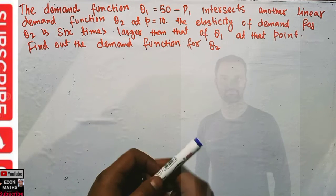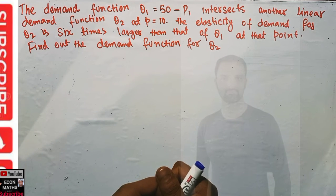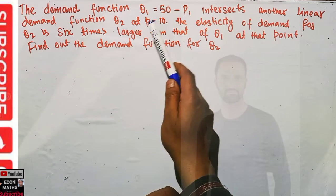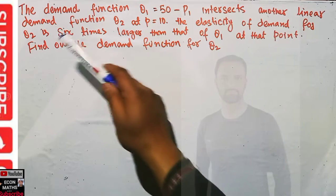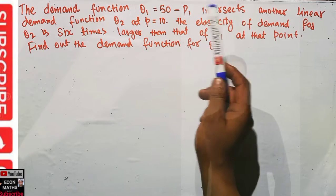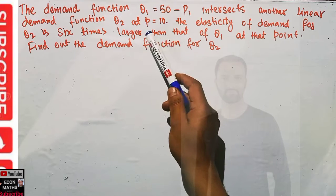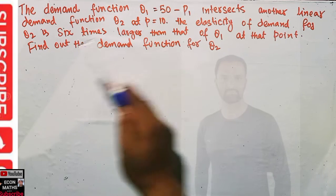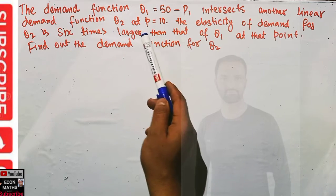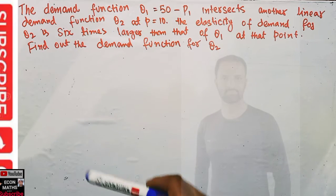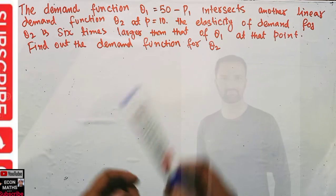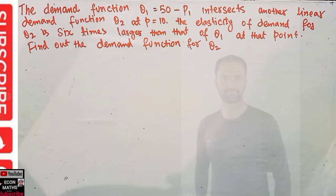In this video we will try to solve an important question regarding elasticity of demand. The question is: the demand function q1 is equal to 50 minus p1 intersects another linear demand function q2 at p equal to 10. The elasticity of demand for q2 is six times larger than that of q1 at that point when p is equal to 10. We have to find out the demand function for q2.